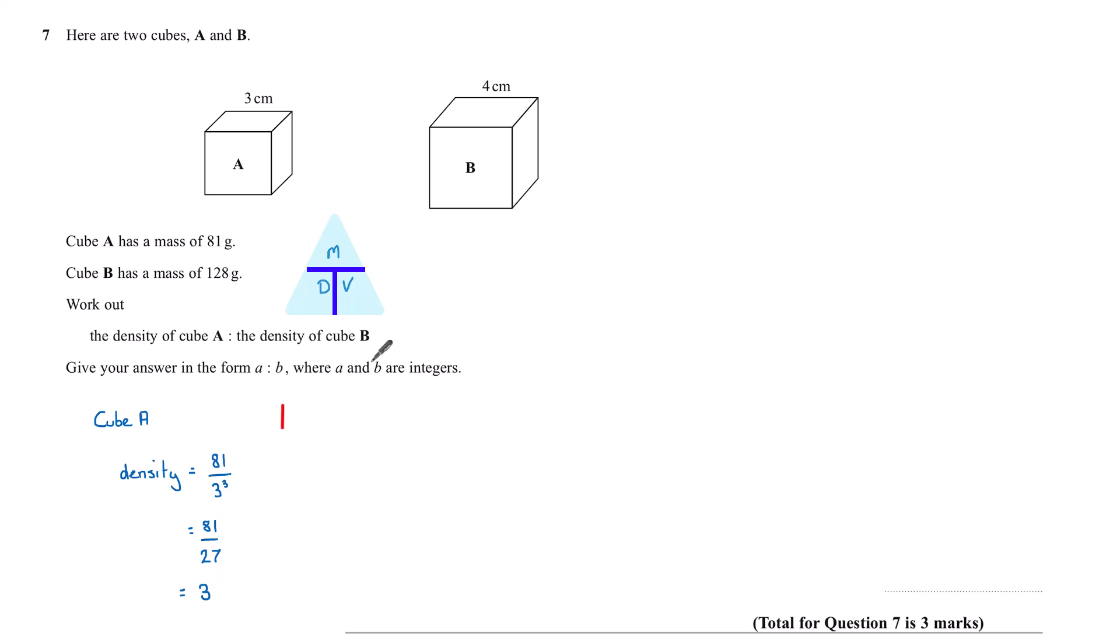For cube B, the density is its mass, 128, divided by its volume, which is 4 cubed. And so the density for cube B is 128 over 64, which is 2.